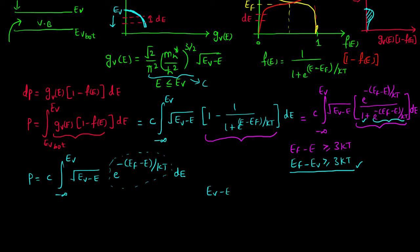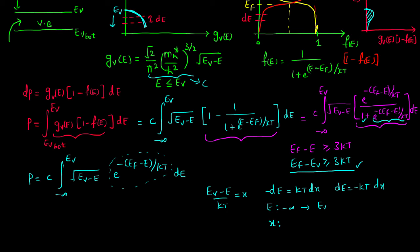From here it becomes a straightforward mathematical problem. We substitute x = (EV − E) / kT as a new variable, which gives dE = −kT dx. Wherever we have dE, we substitute −kT dx. As E changes from minus infinity to EV, the limits for x change from plus infinity to 0. We can also express (EF − E)/kT in terms of x, where the second term is the newly defined variable x.